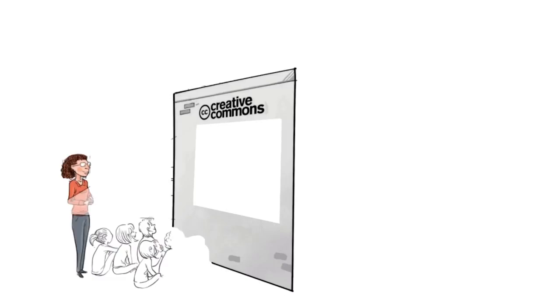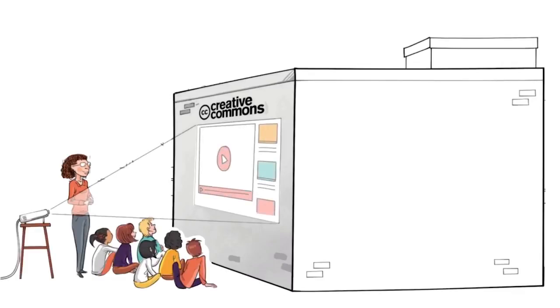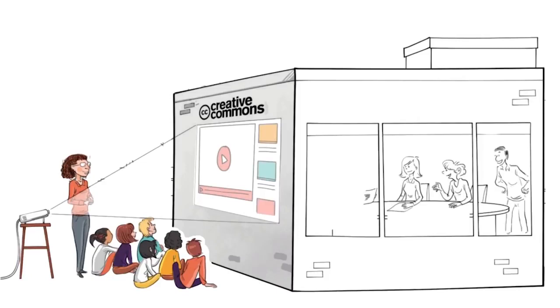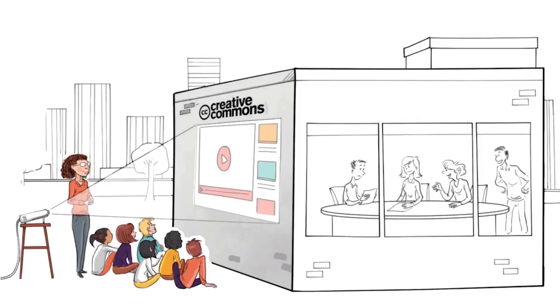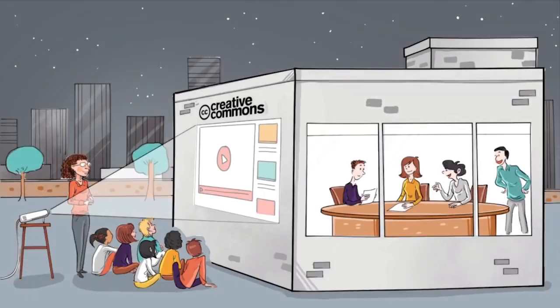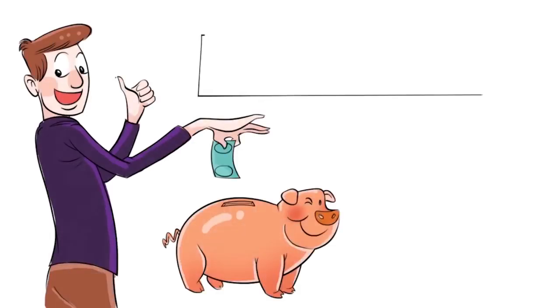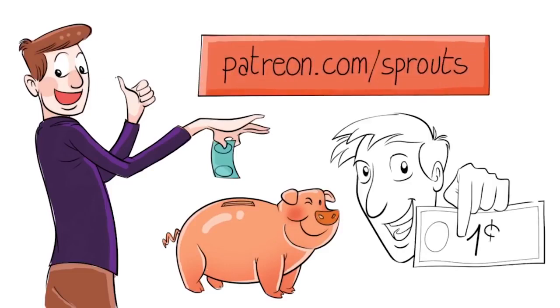Sprouts videos are published under the Creative Commons license. That means our videos are free and anyone can download, edit, and play them for personal use. And public schools, governments, and non-profit organizations can also use them for training, online courses, or designing new curriculums. To help us stay independent and support our work, you can join our patrons and contribute. Just visit patreon.com/sprouts. Even one dollar can make a difference.